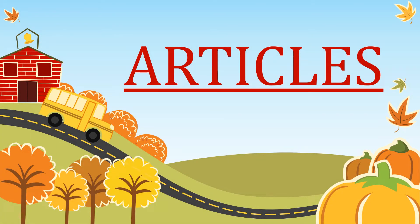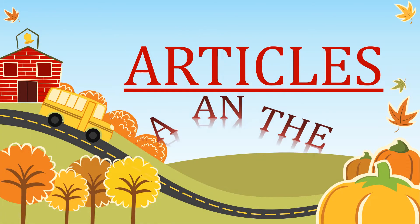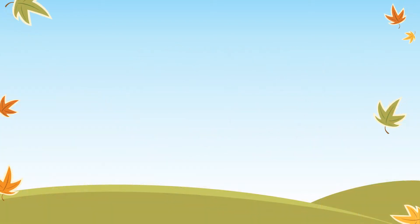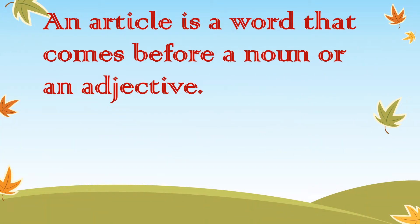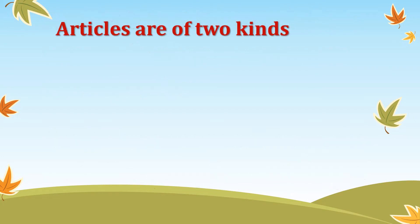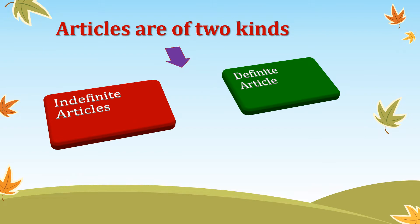Articles. What are articles? Look what's coming up: A, an, the. These are articles. An article is a word that comes before a noun, or at times before an adjective too. Articles are used to point out the people or things. There are two kinds of articles: indefinite articles and definite articles.